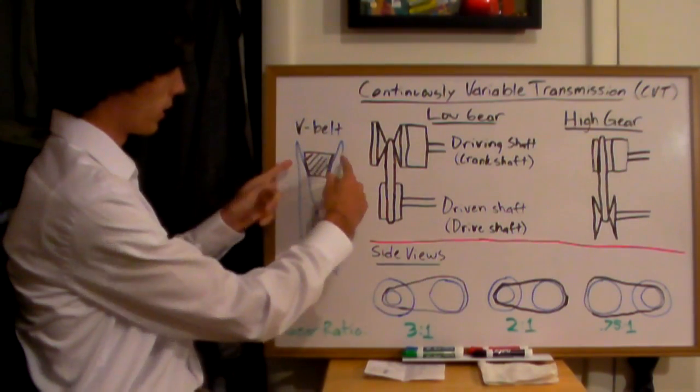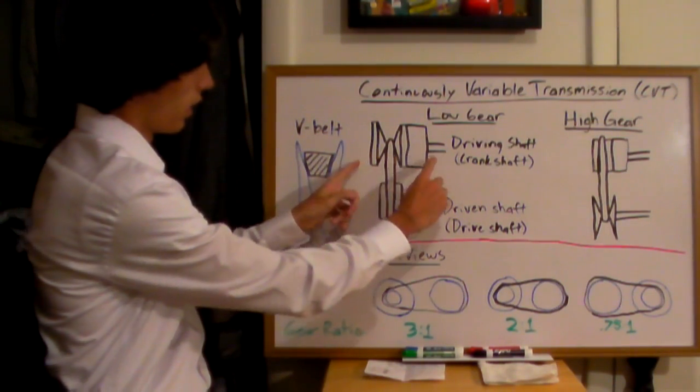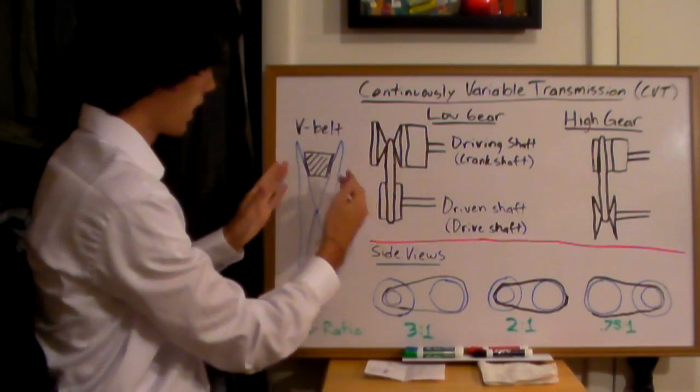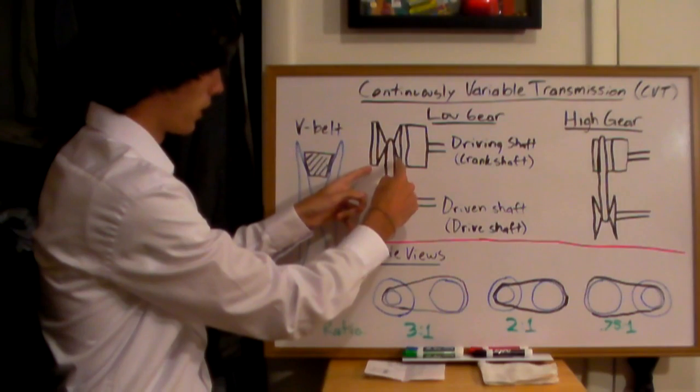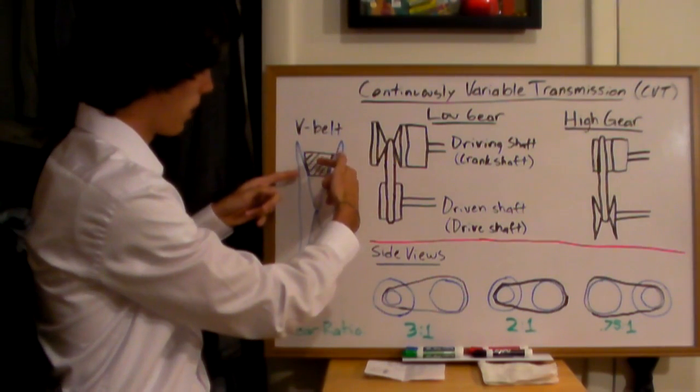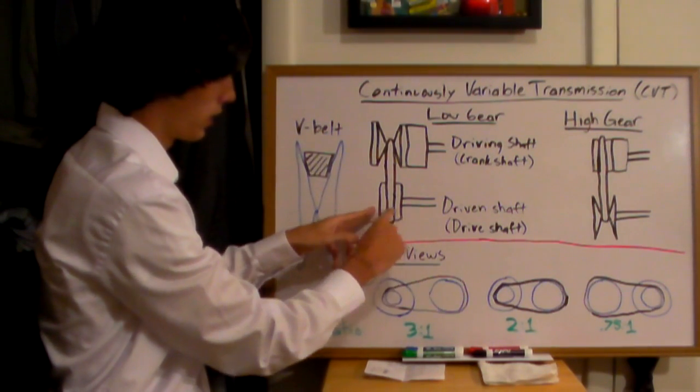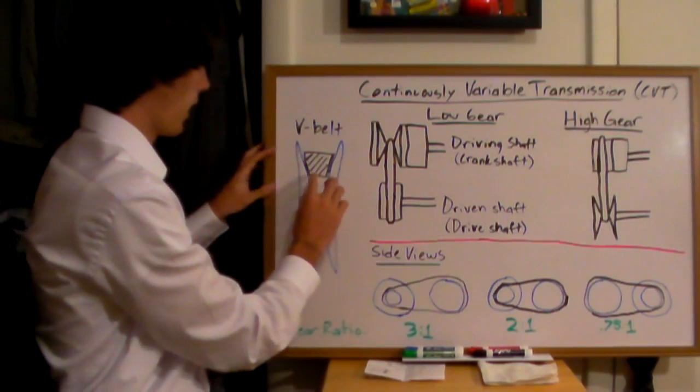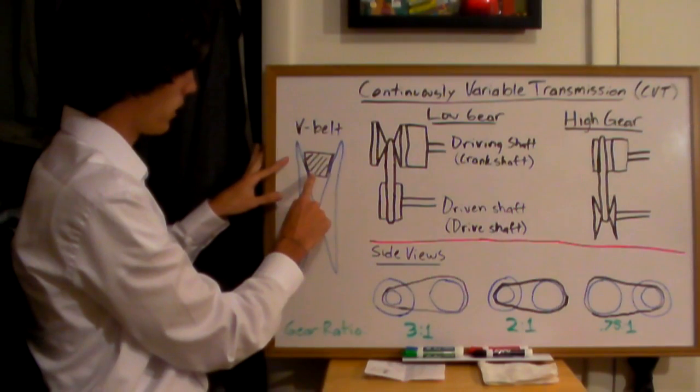You'll have a pulley, like you can see here, connected to your crankshaft or your driving shaft, and that pulley is going to be connected by a V-belt to another pulley, which will be your driven shaft or your drive shaft, and so you're going to have this V-belt here.